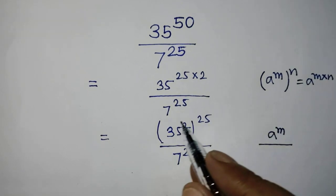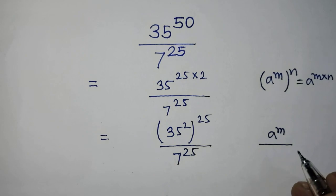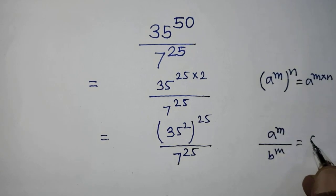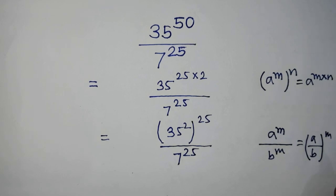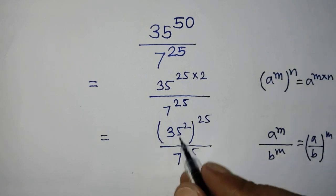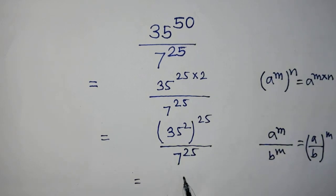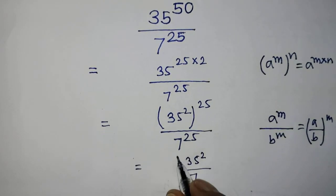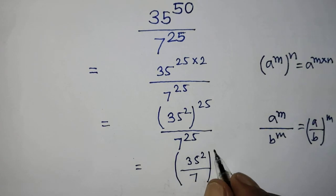To simplify this exponential form, we have to apply the formula: A to the power M over B to the power M is equal to A over B whole to the power M. So according to this formula, it will be 35 to the power 2 over 7, whole to the power 25.